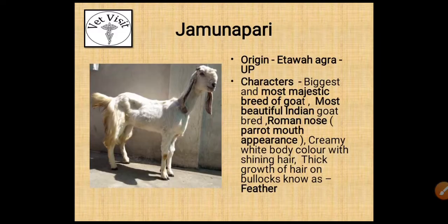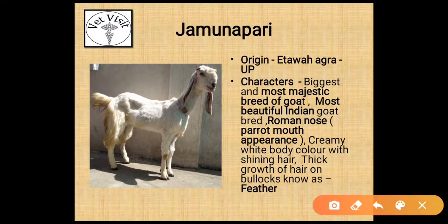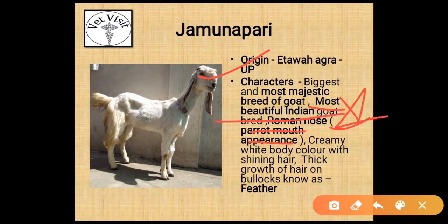Description of Indian goat breeds. Jamunapuri: its origin is Etawah, UP and Agra. Its characters are that it is the biggest and most majestic breed of goat. 'Majestic' means very beautiful, dignified and impressive. It has a roman nose and parrot mouth appearance — mark this as star. It has a creamy white body color with shining hair, and thick growth of hair on the buttocks known as 'feather'.